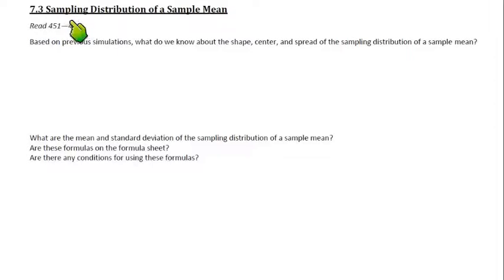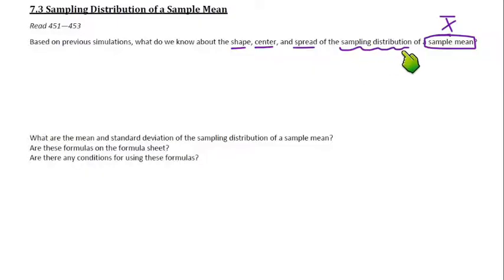This is section 7.3. We're talking about the sampling distribution of a sample mean. The first part asks: based on previous simulations, what do we know about the shape, center, and spread of the sampling distribution of a sample mean? Remember, that's if we have all of our sample means, x-bar, stacked up into a dot plot. In 7.2, we did everything for sample proportions, p-hats. Now we're doing sample means, so x-bars.